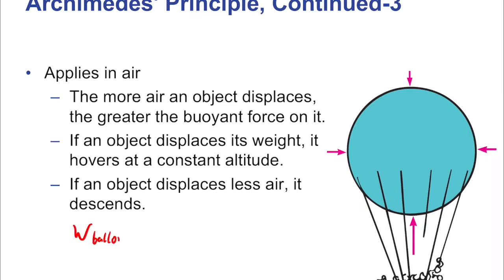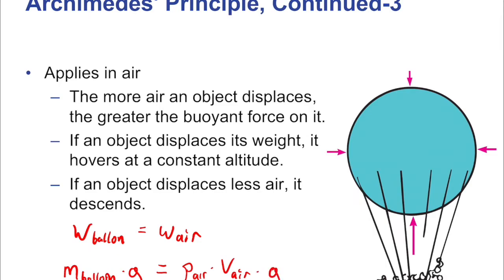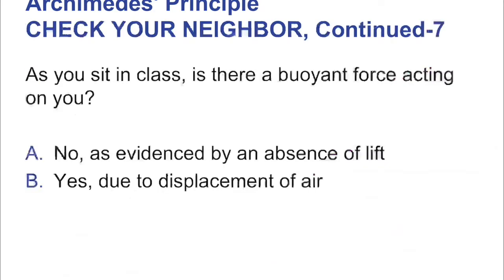The weight of the balloon equals the mass of the balloon times gravity. The weight of the displaced air equals the density of the air times the volume displaced — which is the volume of the entire balloon plus basket — times gravity. You probably wouldn't use density times volume for the balloon's mass since the basket has a different density than the balloon itself; that would just be a number given in a problem. As you sit in class or watch this video, there is a buoyant force acting on you — you displace air, and anytime you displace any fluid, there's a force.